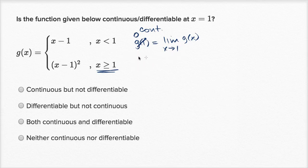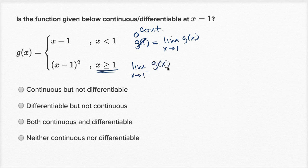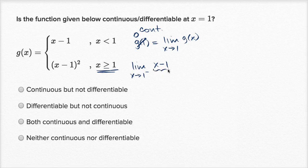Let's do the left and right-handed limits here, which is especially useful because we're in these different clauses as we approach from the left and right hand side. As x approaches one from the left hand side, we're going to be falling into this situation — g of x when x is less than one. This thing is defined and continuous for all real numbers, so we can just substitute one in for x and we get zero.